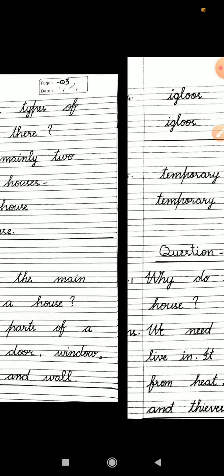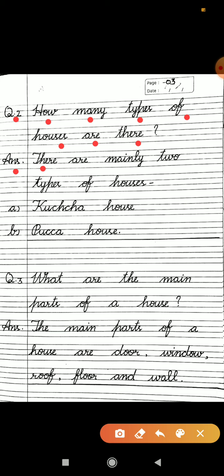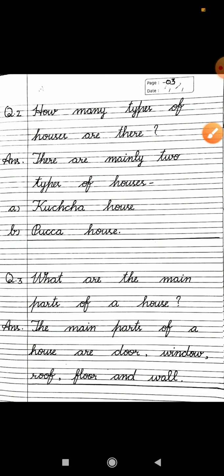After completing it, you will draw one line. Then you will start question number two. How many types of houses are there? Question mark. The answer: There are mainly two types of houses. A. Kaccha house. B. Pakka house. Full stop.